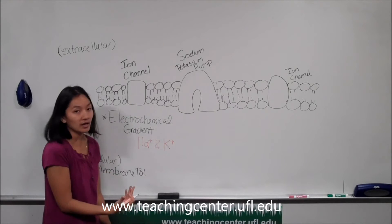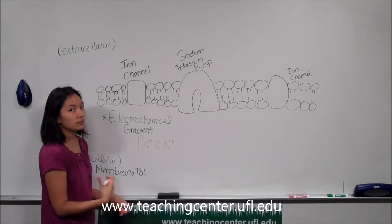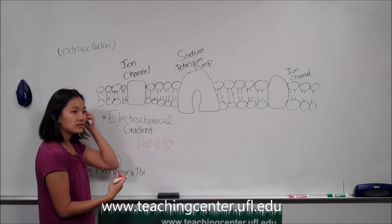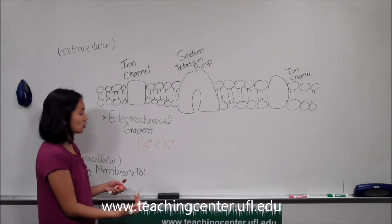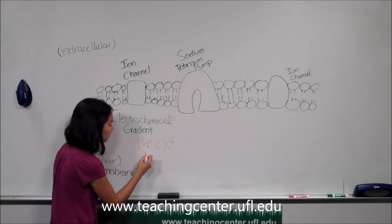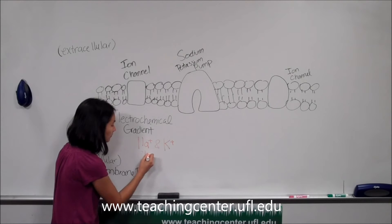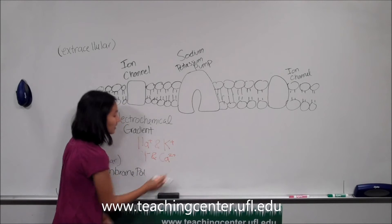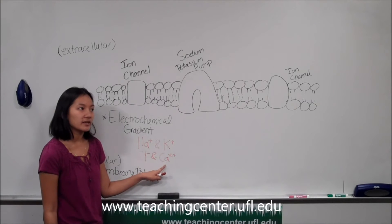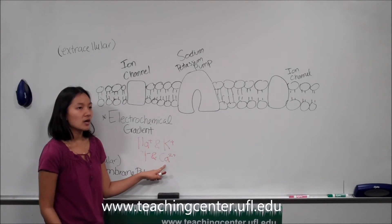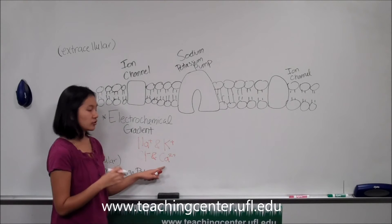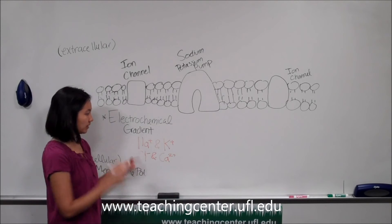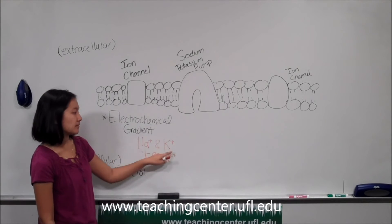Some other ions we won't be covering today but do affect the communication of a neuron include chlorine and calcium. Calcium especially is important when it comes to the release of neurotransmitters all the way at the axon terminal. But for now we'll be focusing on sodium and potassium.